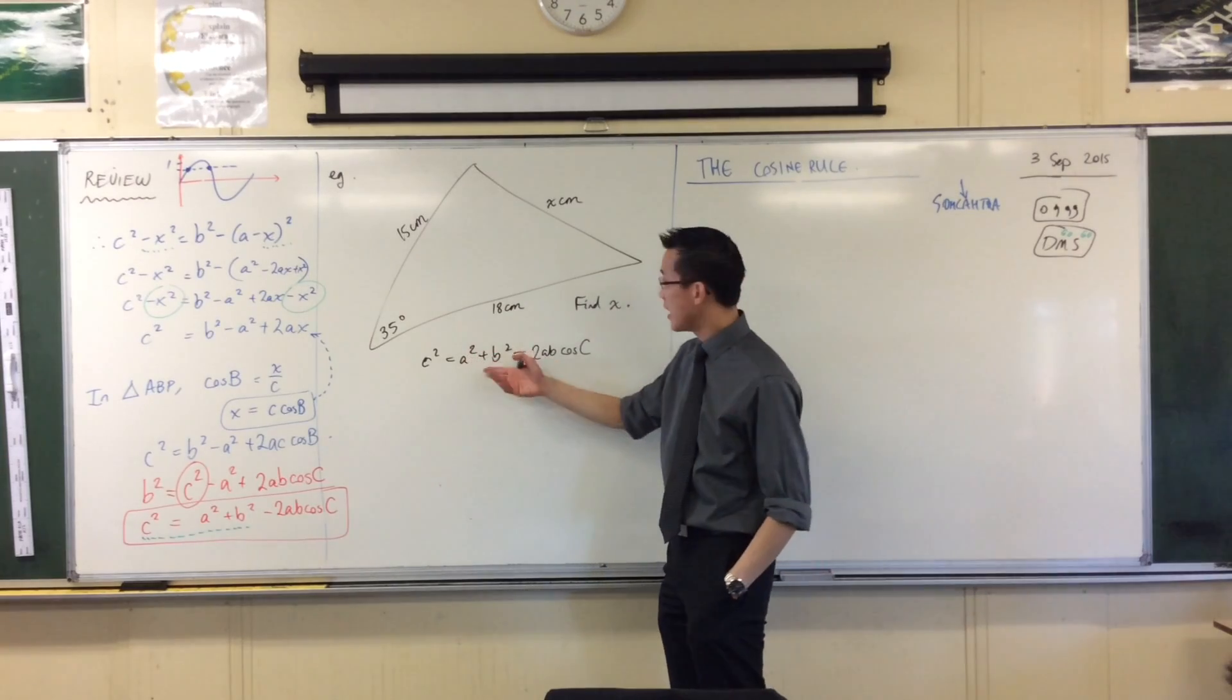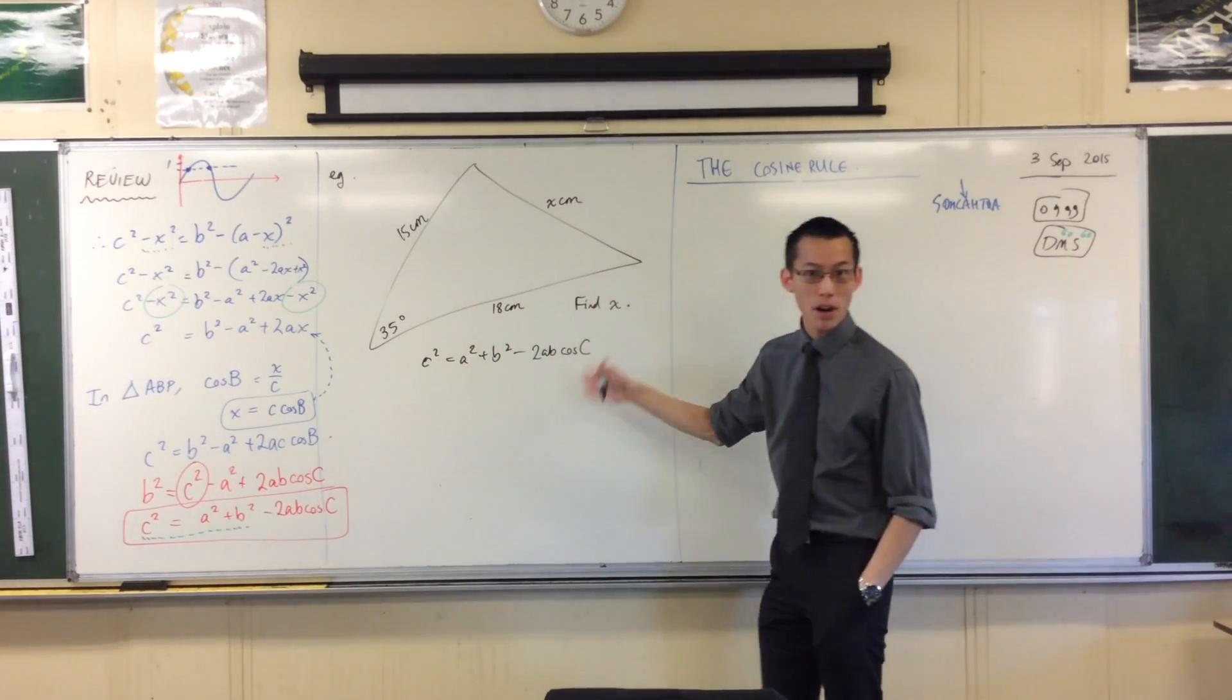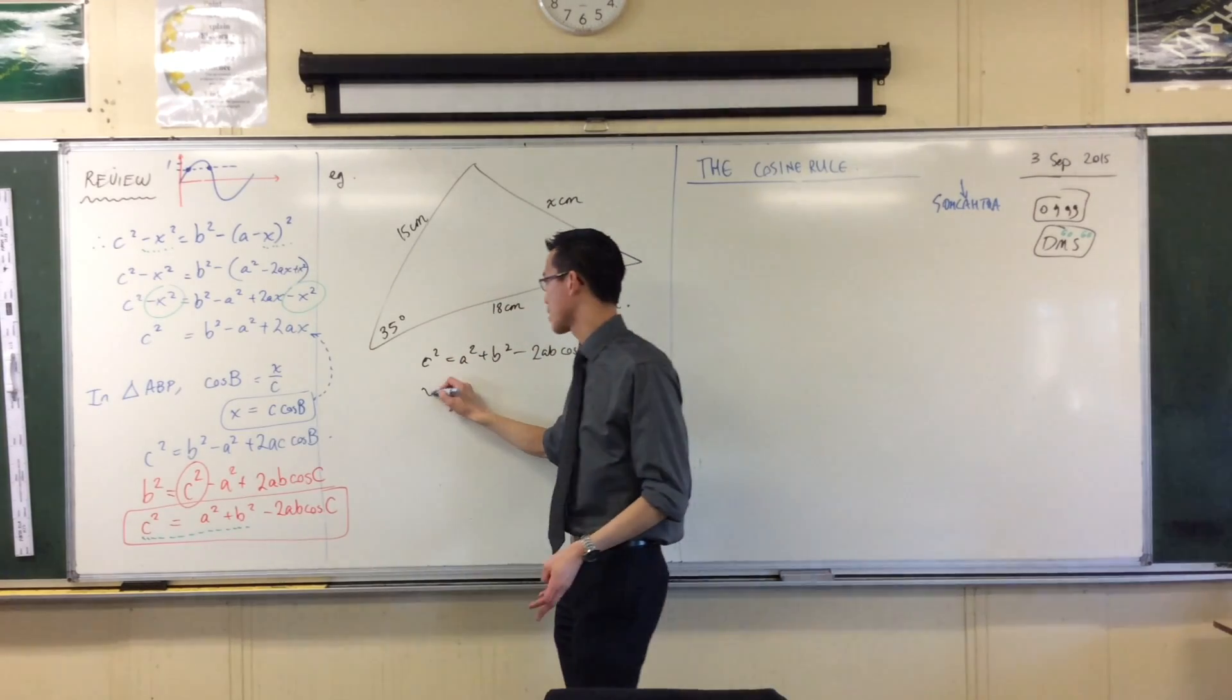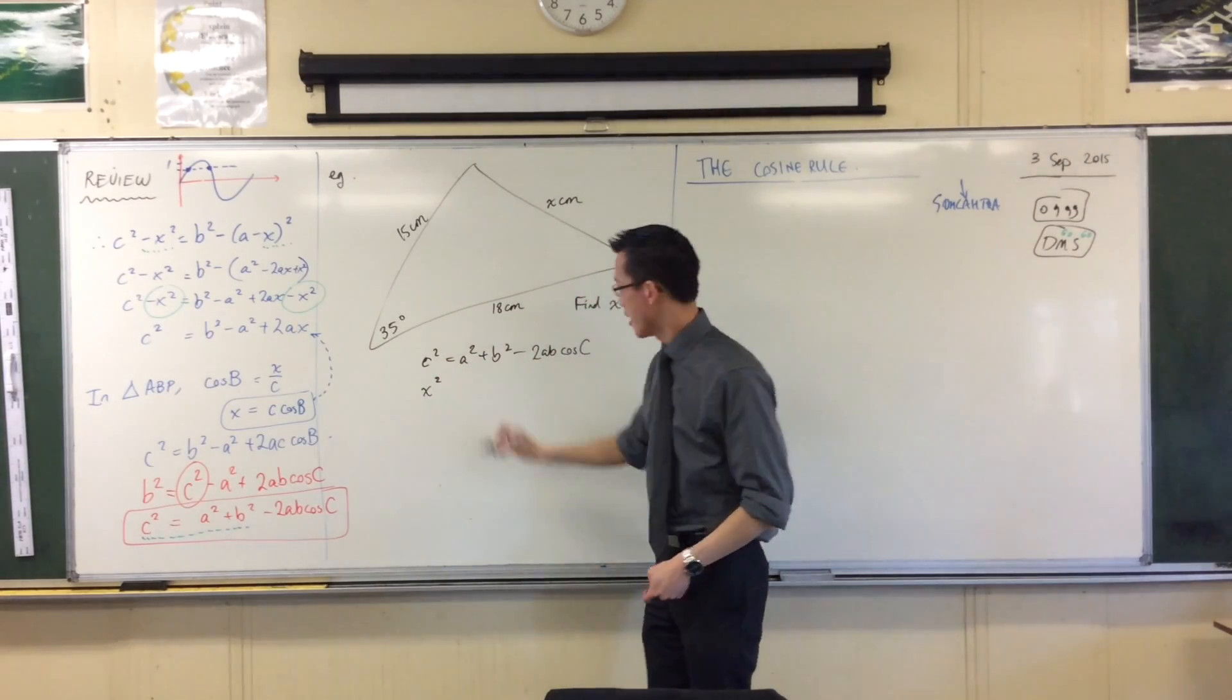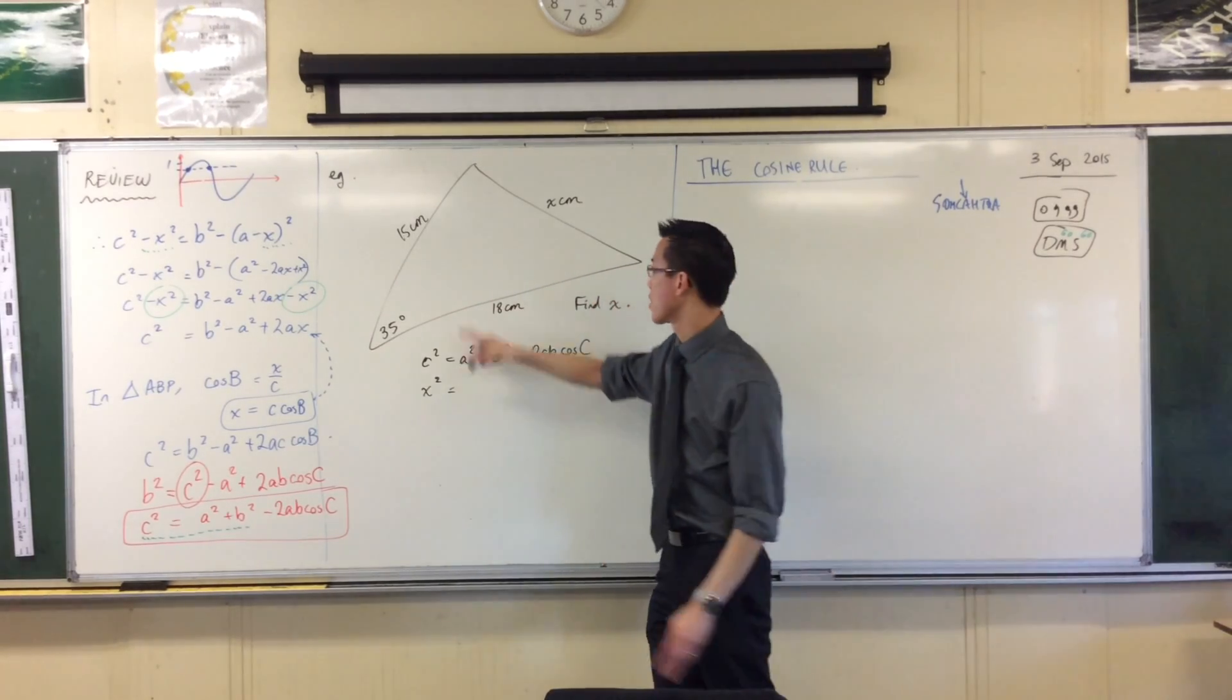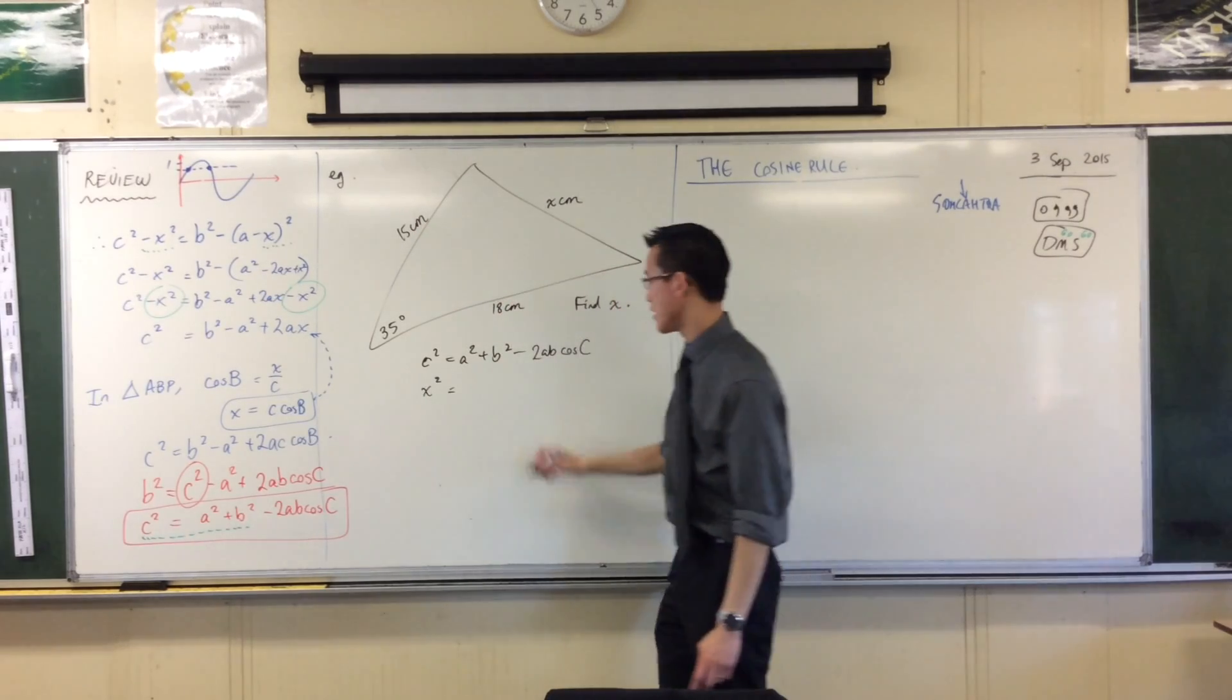So now I'm going to fit in all of these pieces to what I know. I'm going to make the subject the piece of information I'm trying to find. That's x. Then what you've got appearing is the other two sides squared. Just like in Pythagoras, 15 squared plus 18 squared.